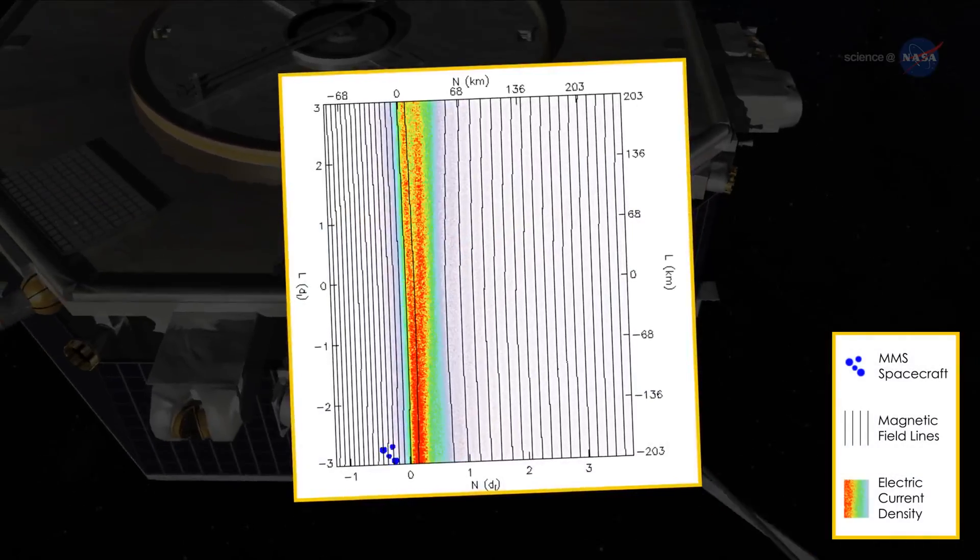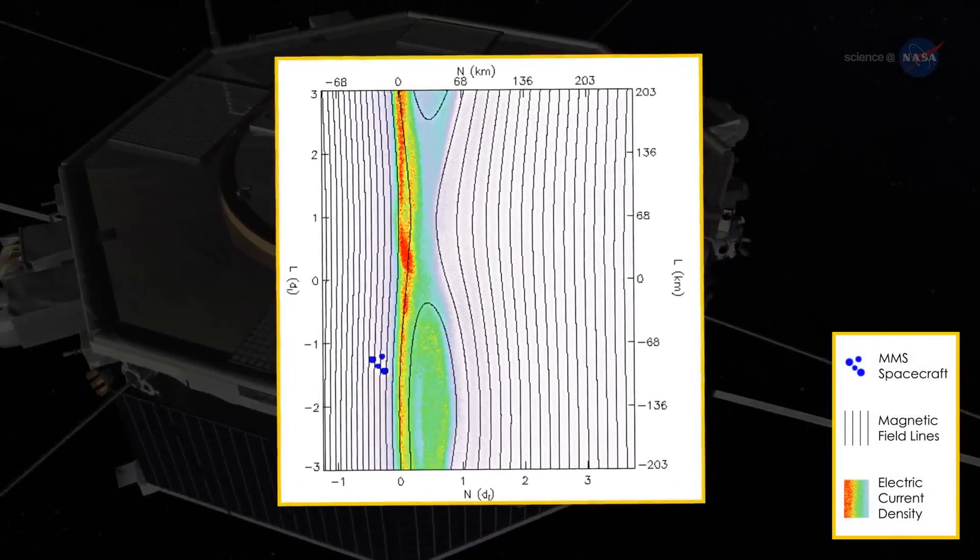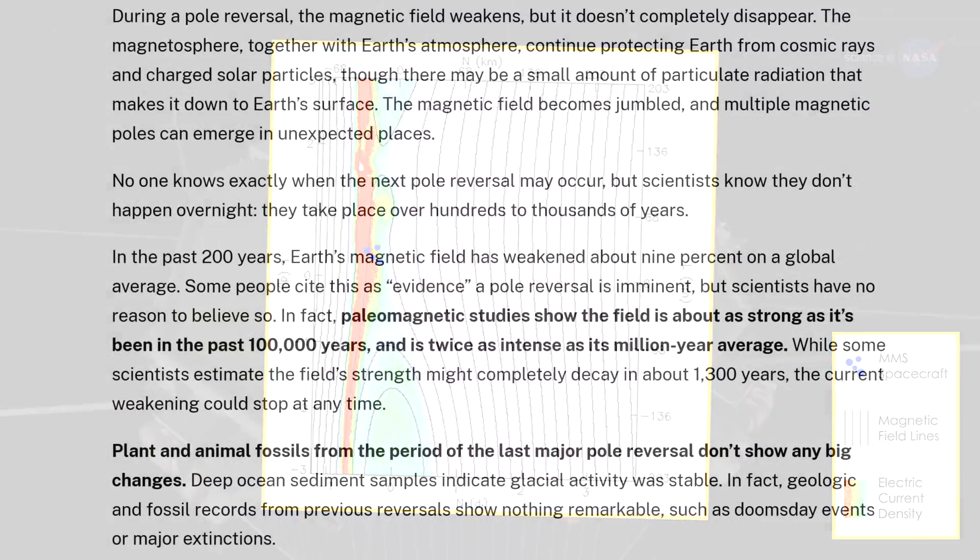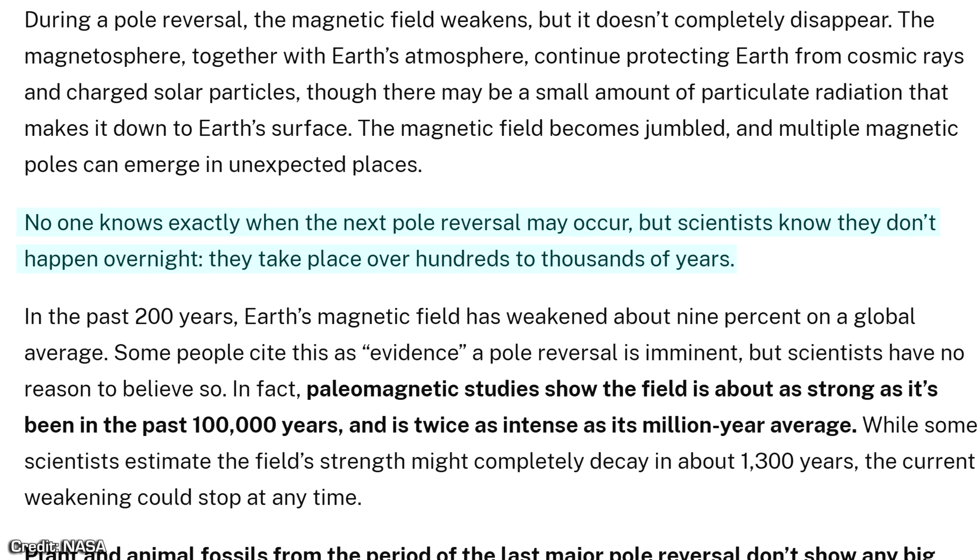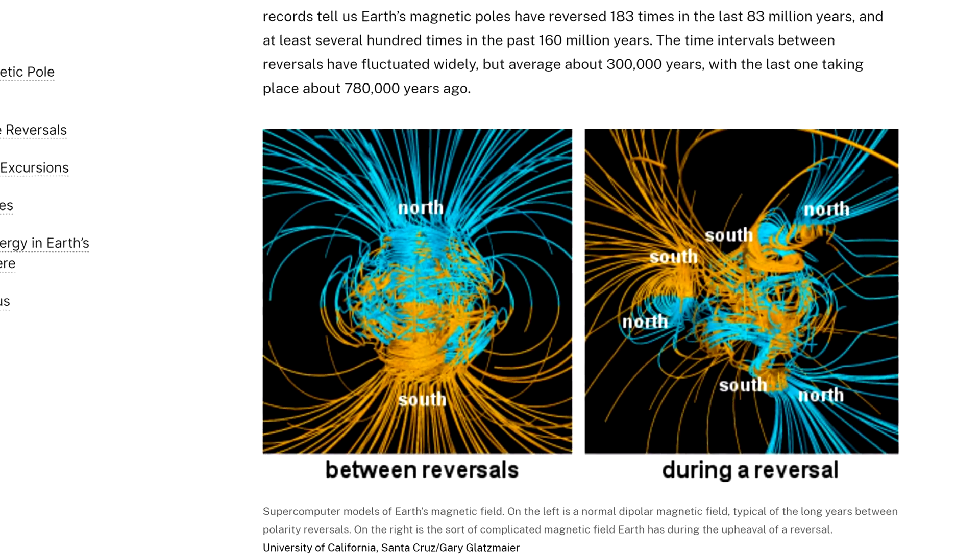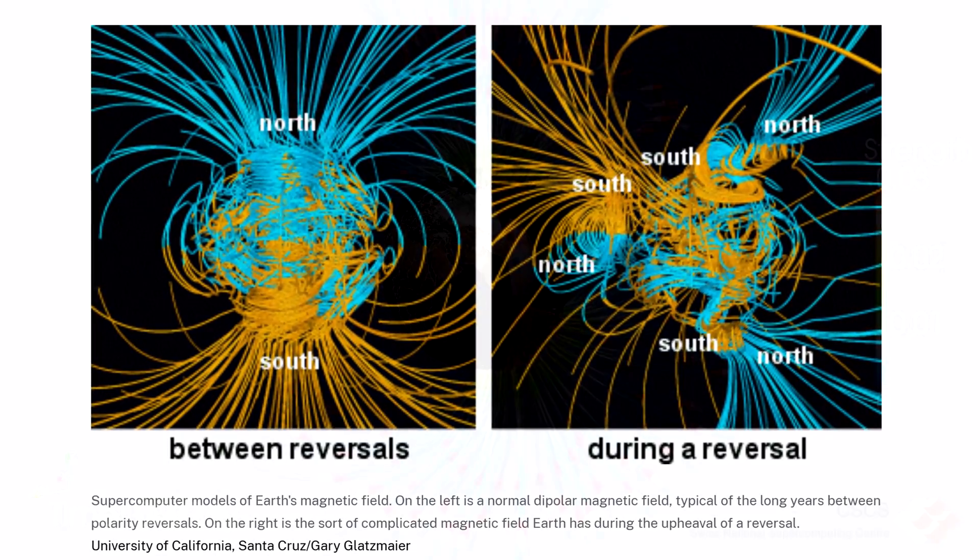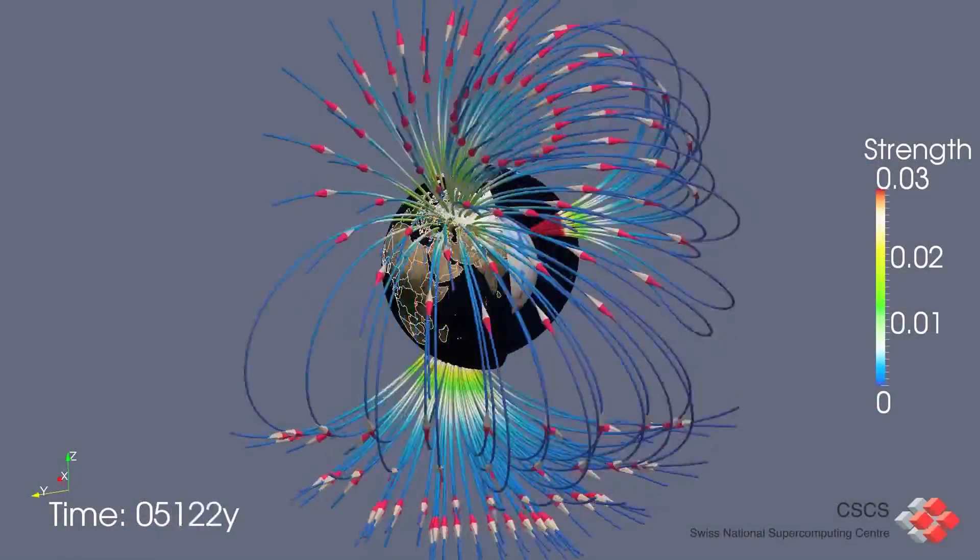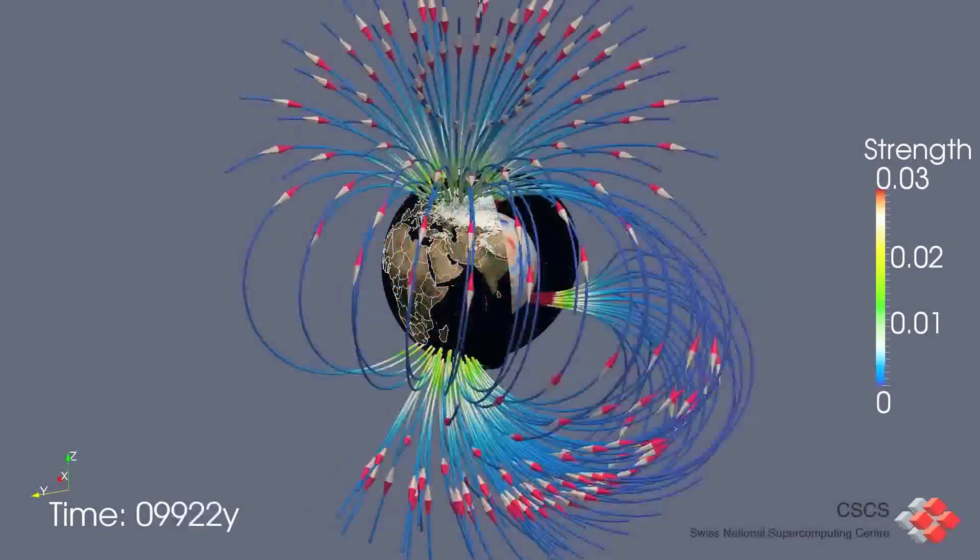Scientists studying in this field also know that a magnetic reversal doesn't happen overnight. A single reversal could take hundreds or even thousands of years to complete a flip. And throughout the duration of a flip, the magnetic field becomes jumbled, where multiple magnetic poles could form temporarily in unexpected places, as shown by numerous simulated models.